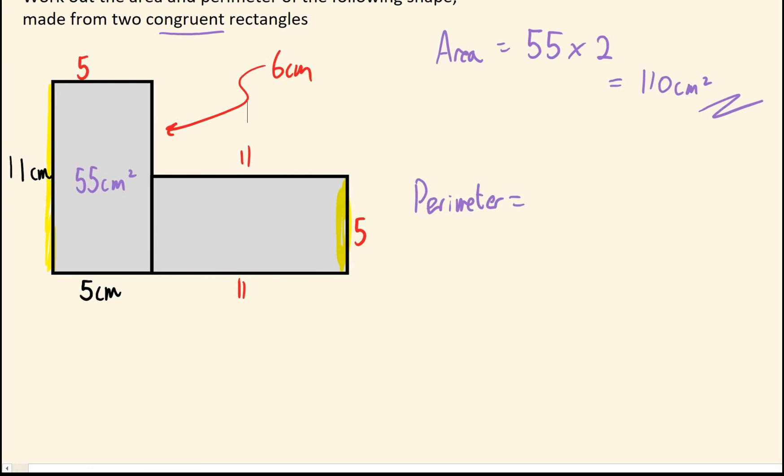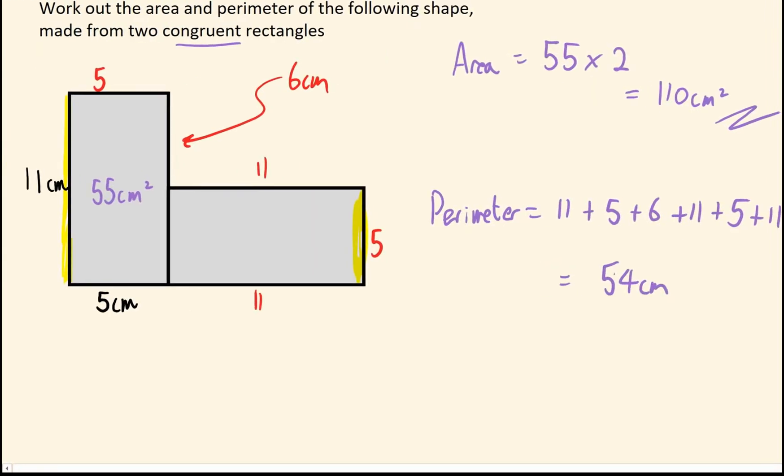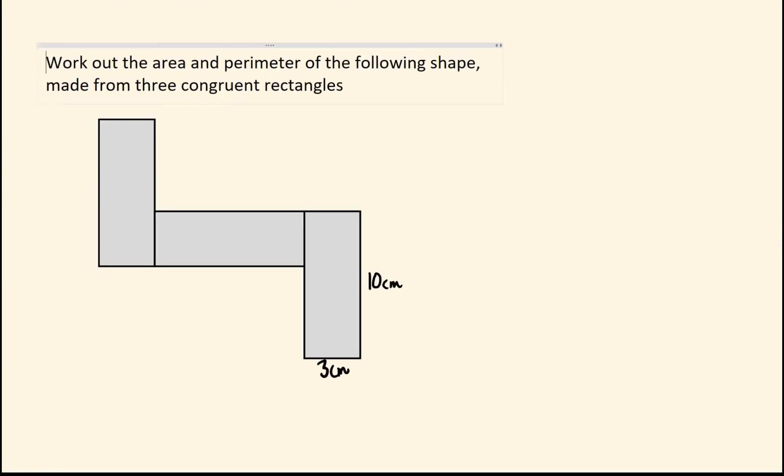All you need to do is just add up all those lengths that are on the screen. So 11 plus 5 plus 6 plus 11 plus 5 plus 11 and plus another 5. So make sure you don't miss any and then you can work it out. Okay, I think off the top of my head that's going to give you 54. If I'm wrong I do apologize.